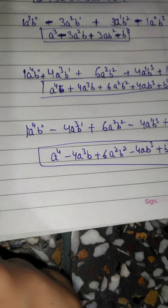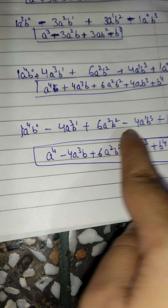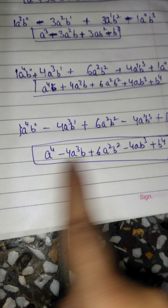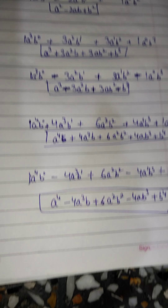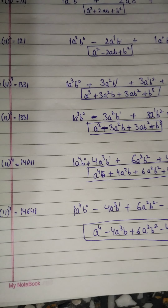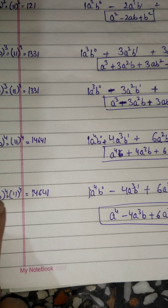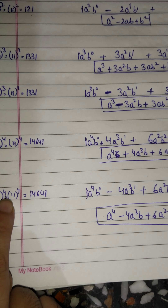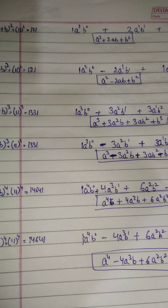For (a-b)⁴, the sign alternates: positive, negative, positive, negative, positive. Note that this trick only applies correctly to (a-b) expressions if the alternating sign pattern is followed properly.